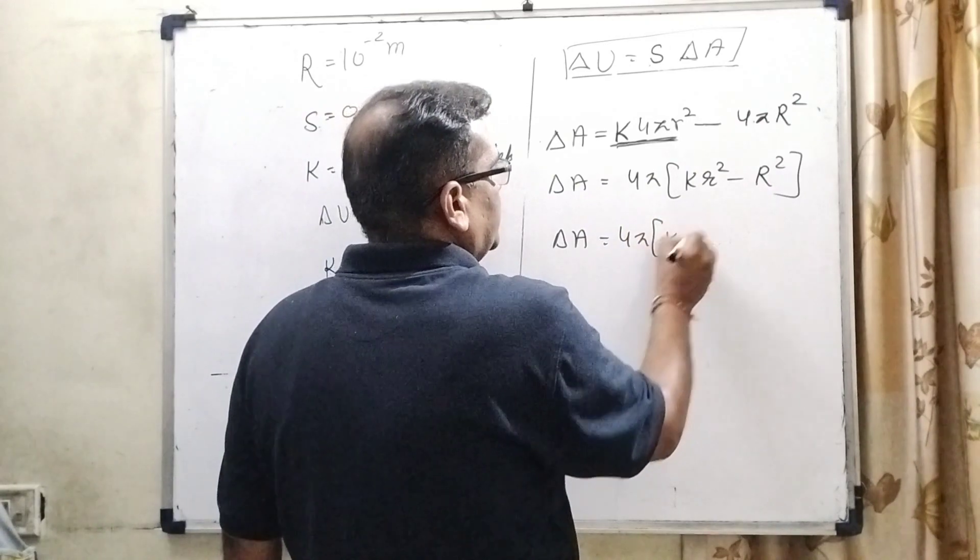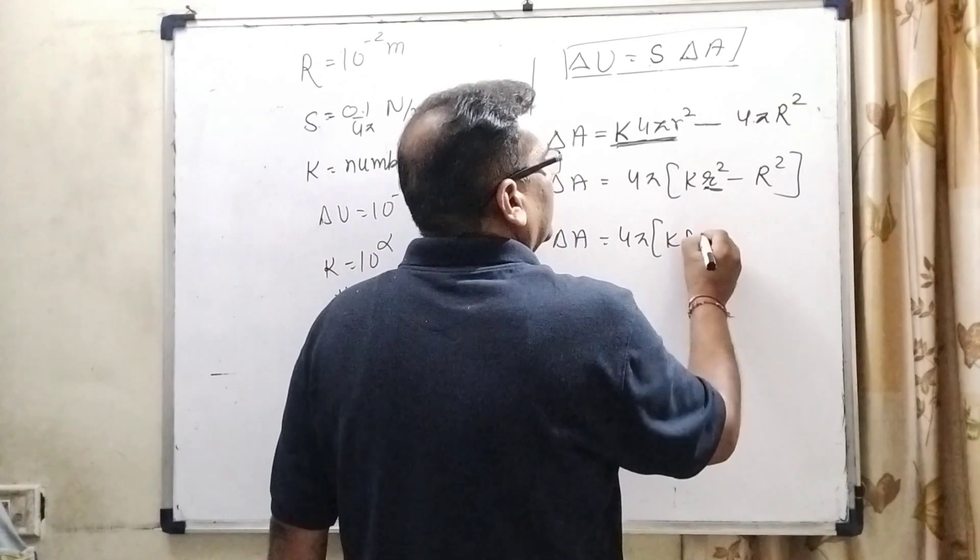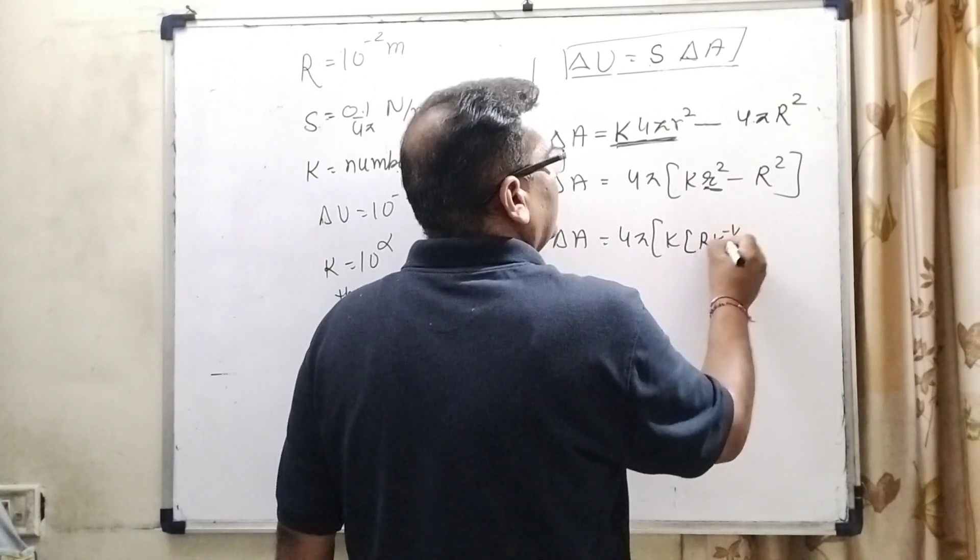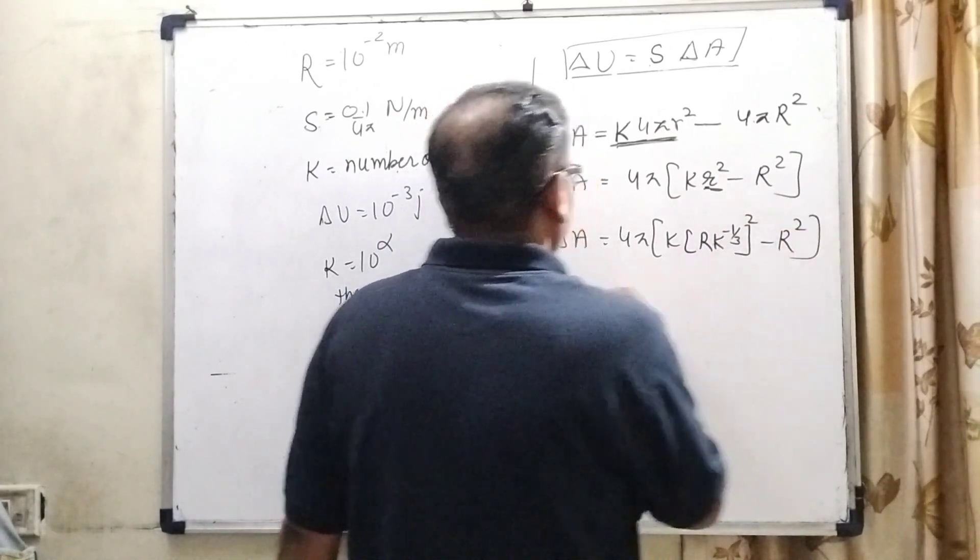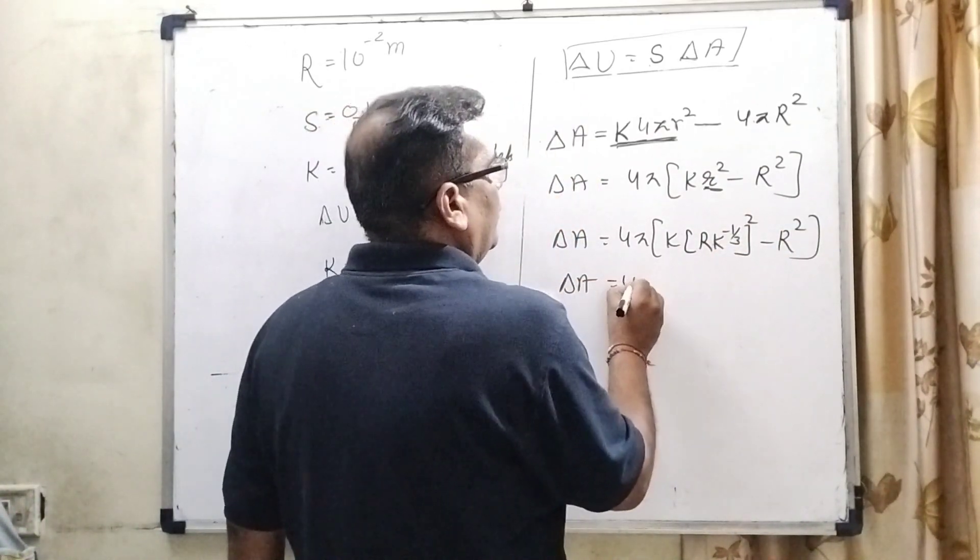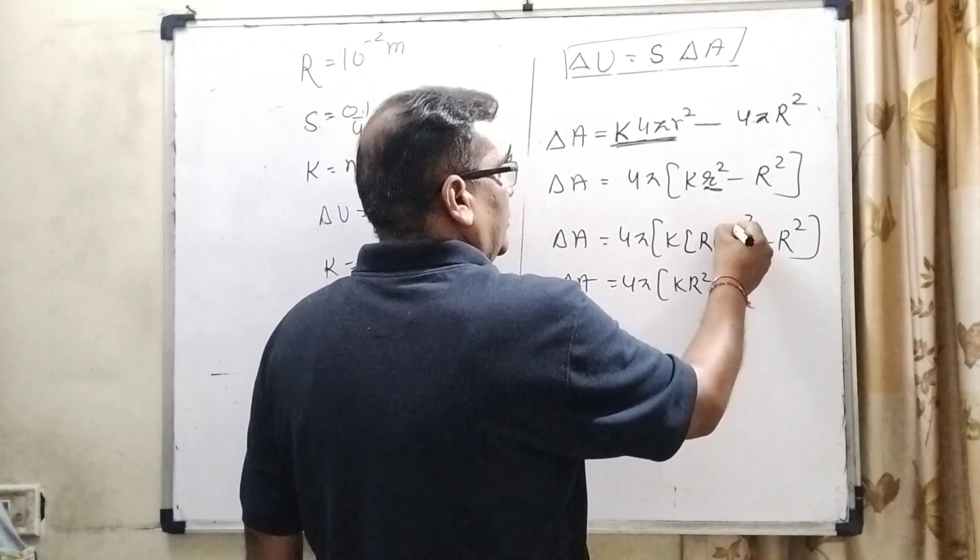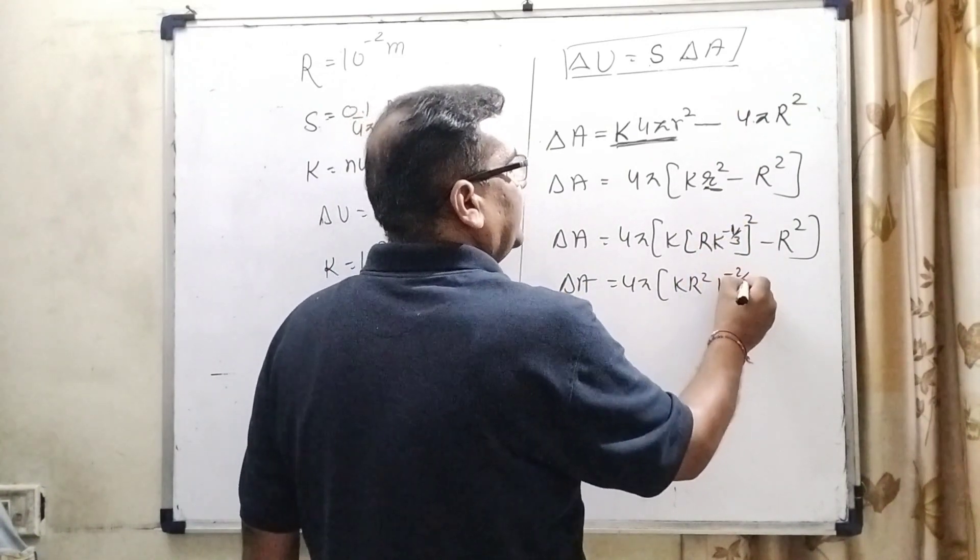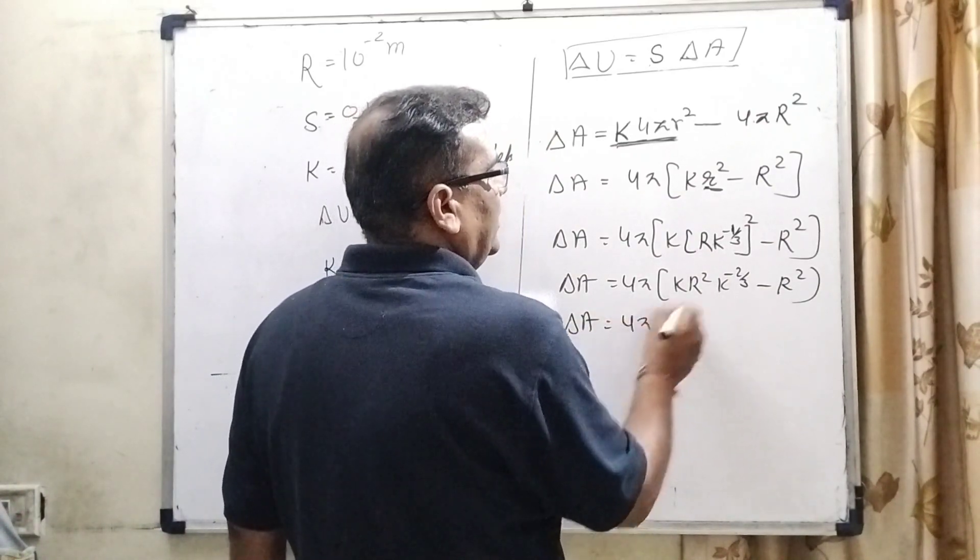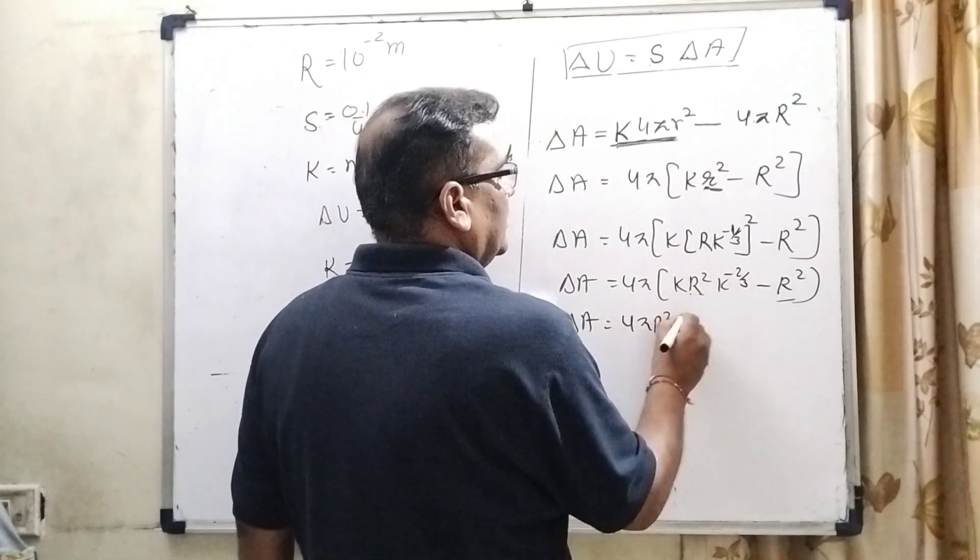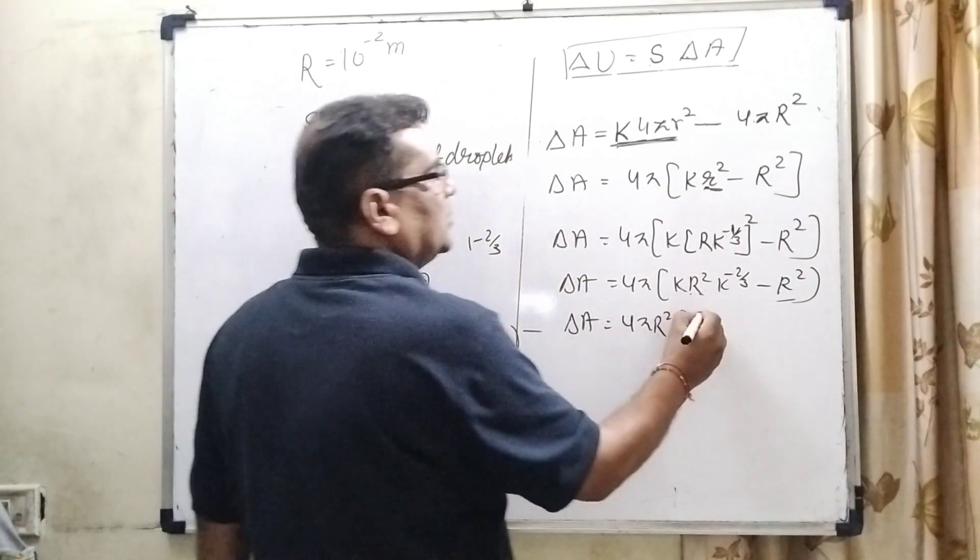So therefore, change in area equal to k identical droplets area 4 pi r square minus 4 pi capital R square. Now, substitute the value of small r. What is the value of small r? Capital R k raised to power minus 1 by 3 whole square minus R square. Delta A equal to 4 pi k r square and using the law of exponent minus 2 by 3 minus R square.